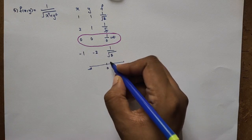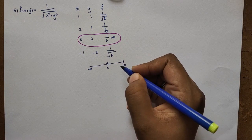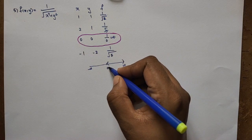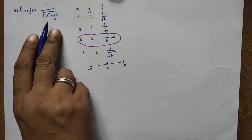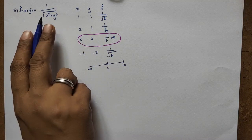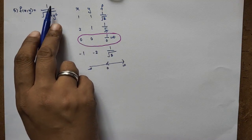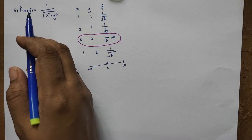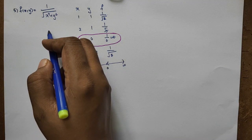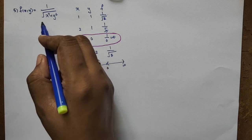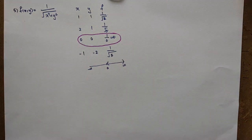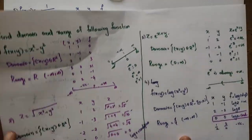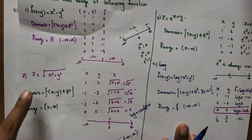So the range goes from 0 to infinity. But can we get 0? No — the numerator is 1, not 0. The root of x²+y² is 0 only at the origin, which is excluded. So 0 is not included. As the denominator grows large, f approaches 0 but never reaches it.